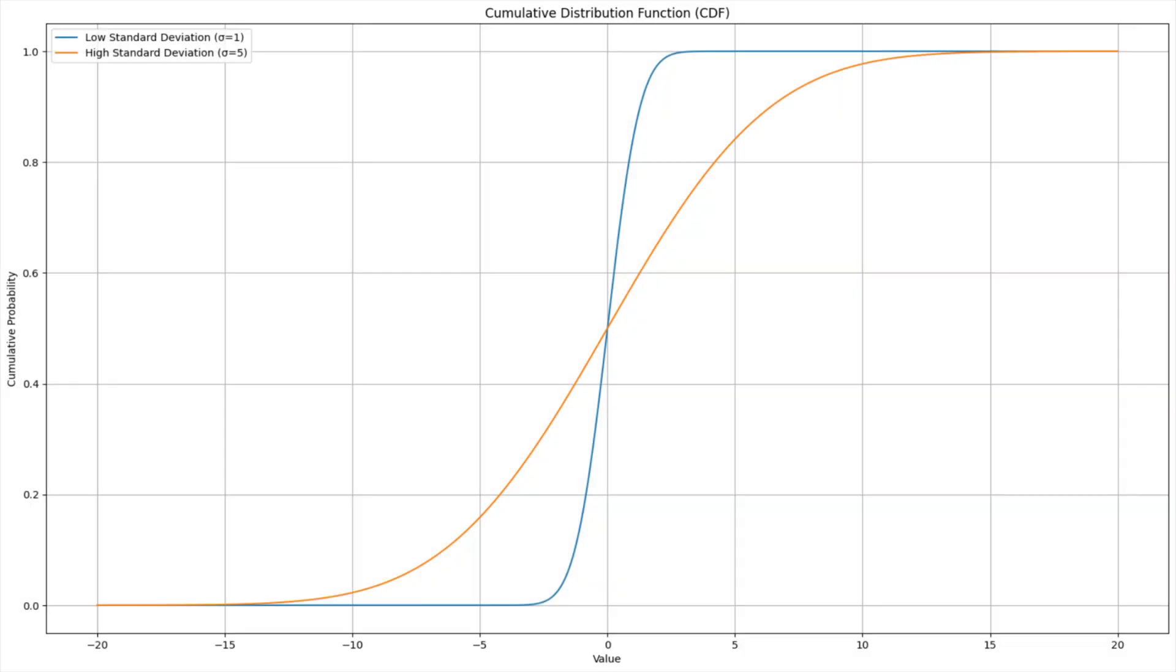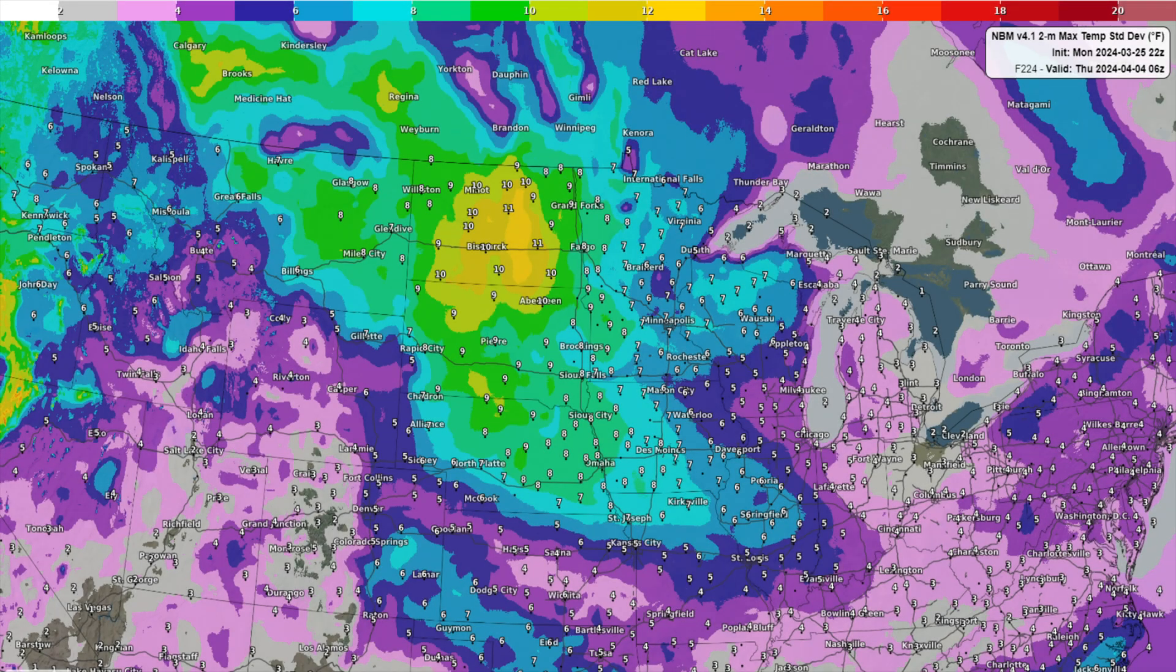Looking at the curves for CDFs, a low standard deviation will have a greater slope from bottom left to upper right, while greater standard deviations will have a broader slope. In meteorological context, a high value of standard deviation implies a high amount of uncertainty.